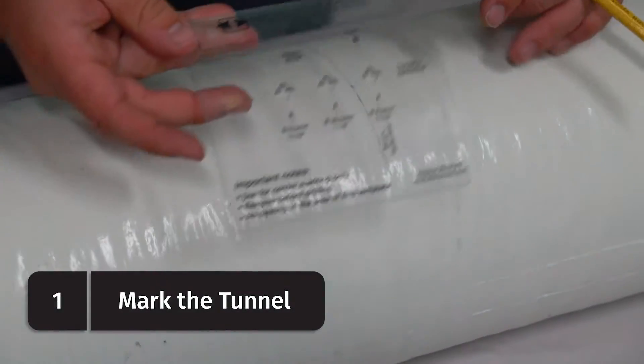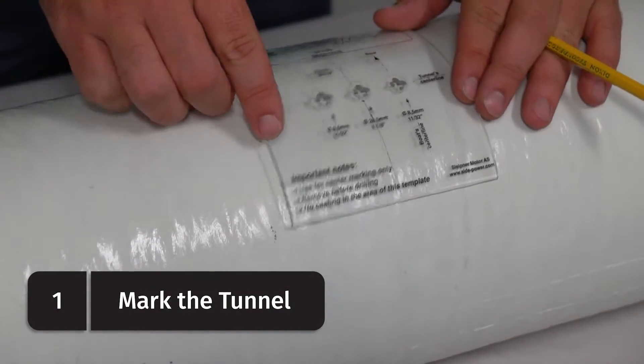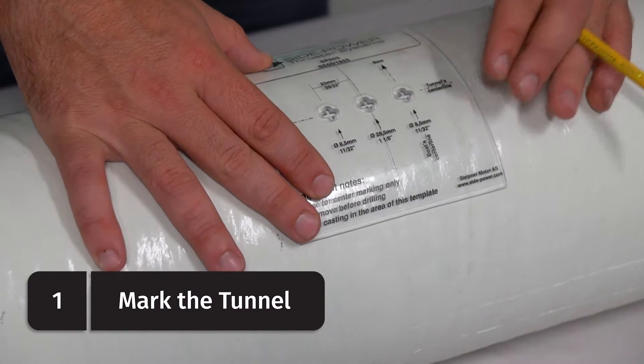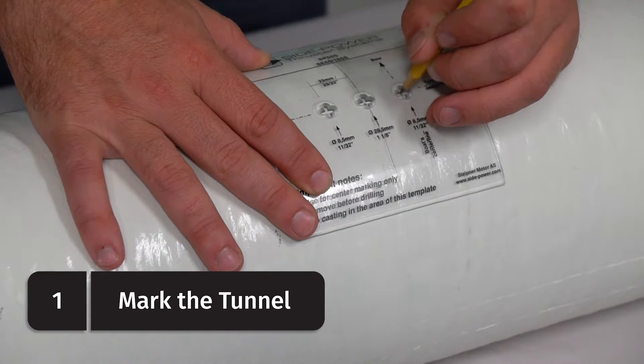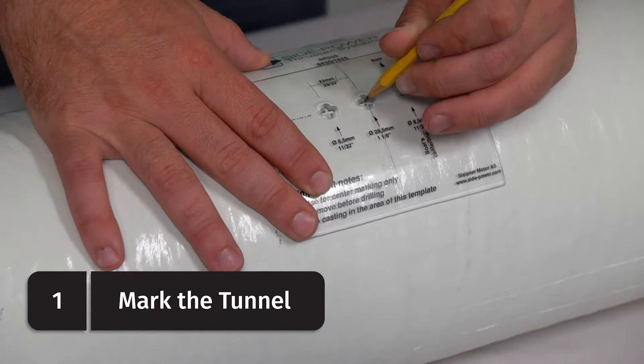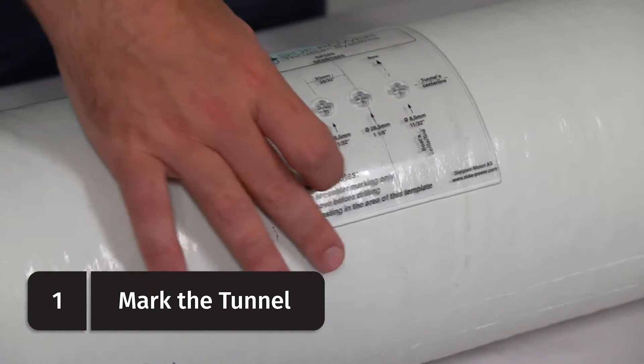The first step is to mark the tunnel where you need to drill the holes for the gear leg using the template supplied with the tunnel tool. Simply line the center of the template up with the center line of the tunnel, hold it firmly in place so it doesn't slide and mark the spots where you'll need to drill.